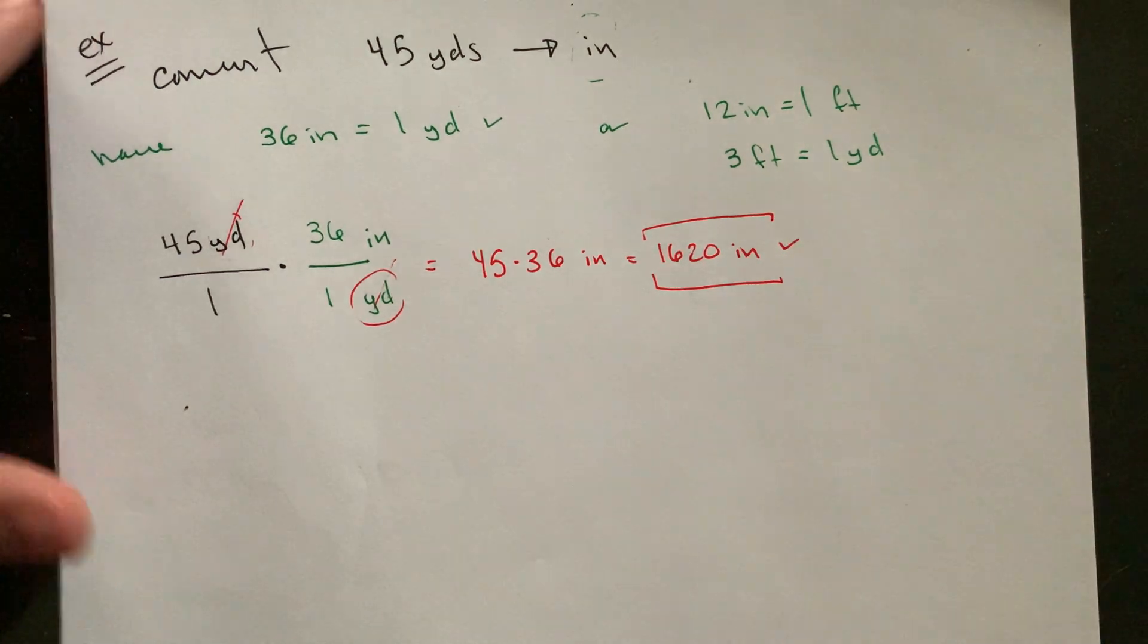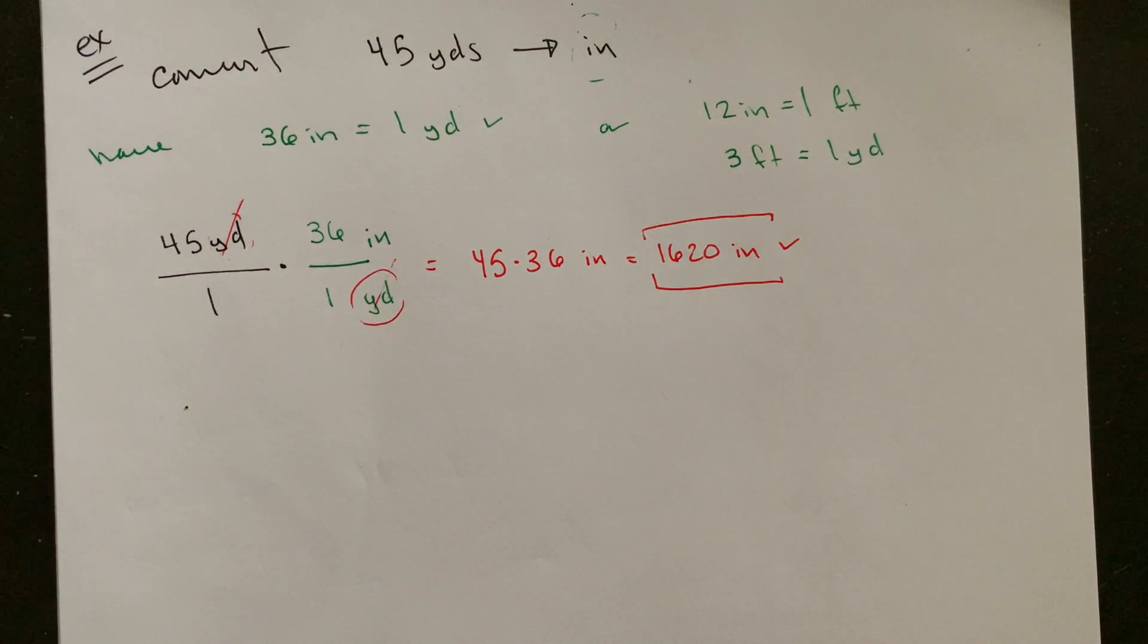So what starts to happen here is you can see something like 45 yards, 45 is not a particularly large number, but if we convert it into a smaller unit, where it's a 36 to one rate, you get now up into the thousands in terms of how many inches we've got.